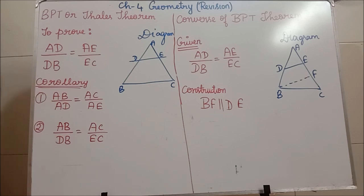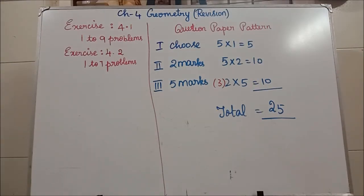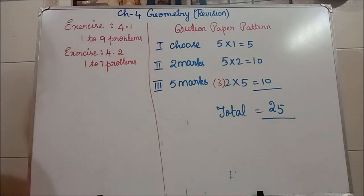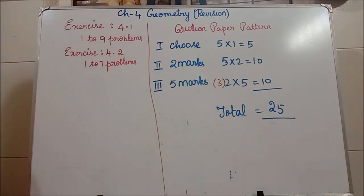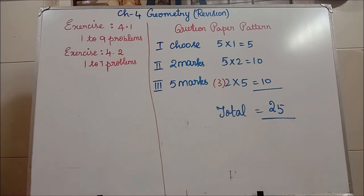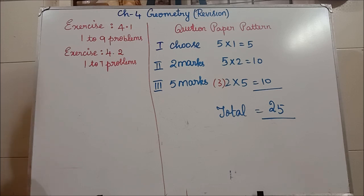Now, the pattern for the test: you get 5 one-mark choose questions, so 5 marks. For 2-mark questions, 5 questions will be given and you have to write all 5, so 10 marks. For 5-mark questions, 3 questions will be given and you have to write only 2, so 10 marks. Total mark is 25. I have given you 18 one-mark questions — 11 written here, and 7 from exercise 4.5.